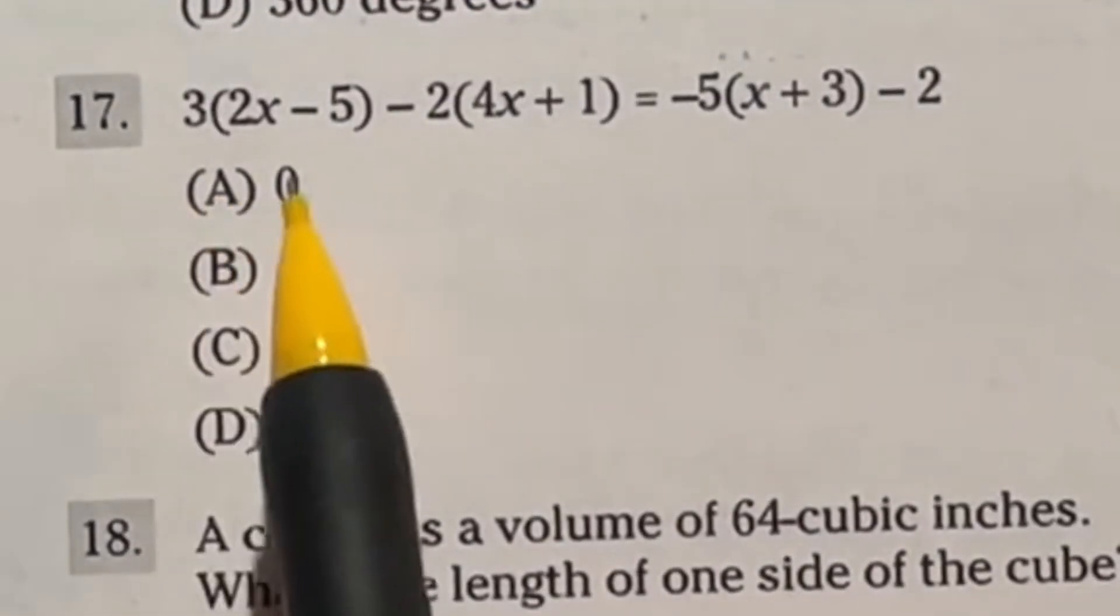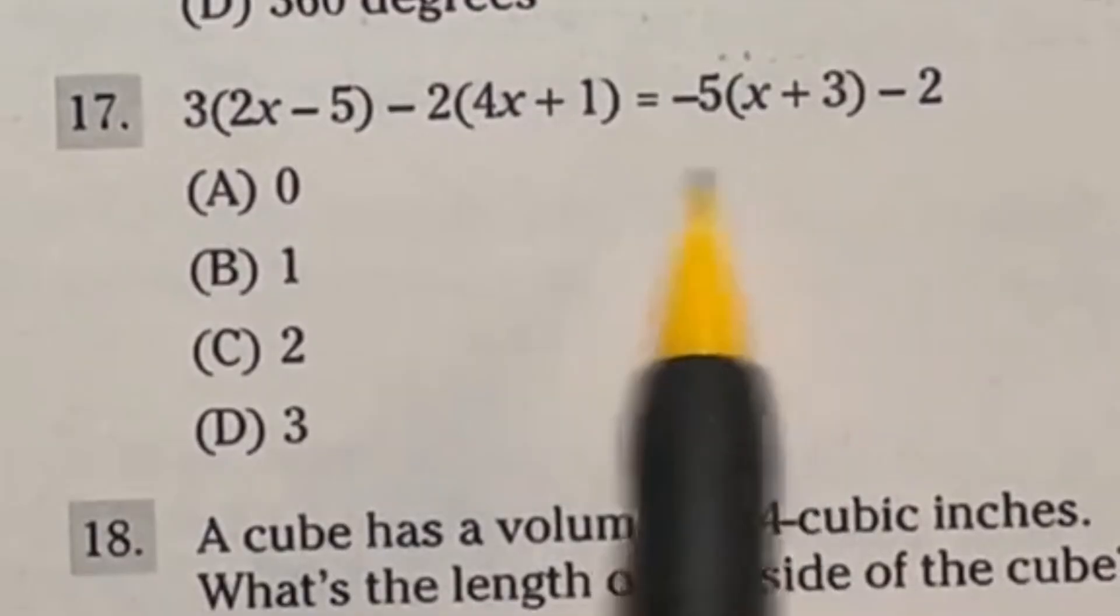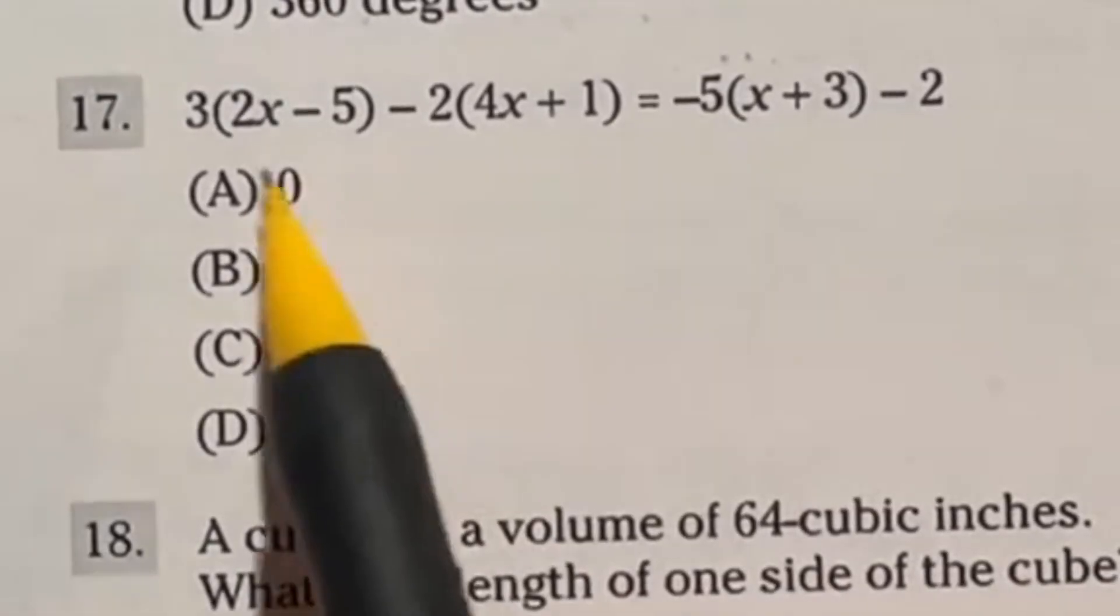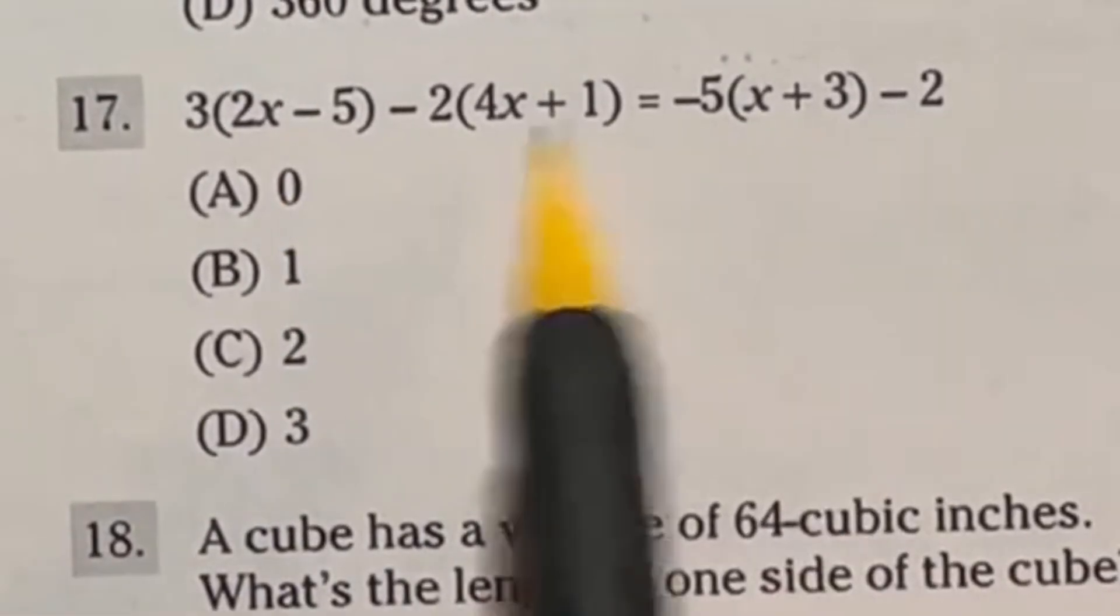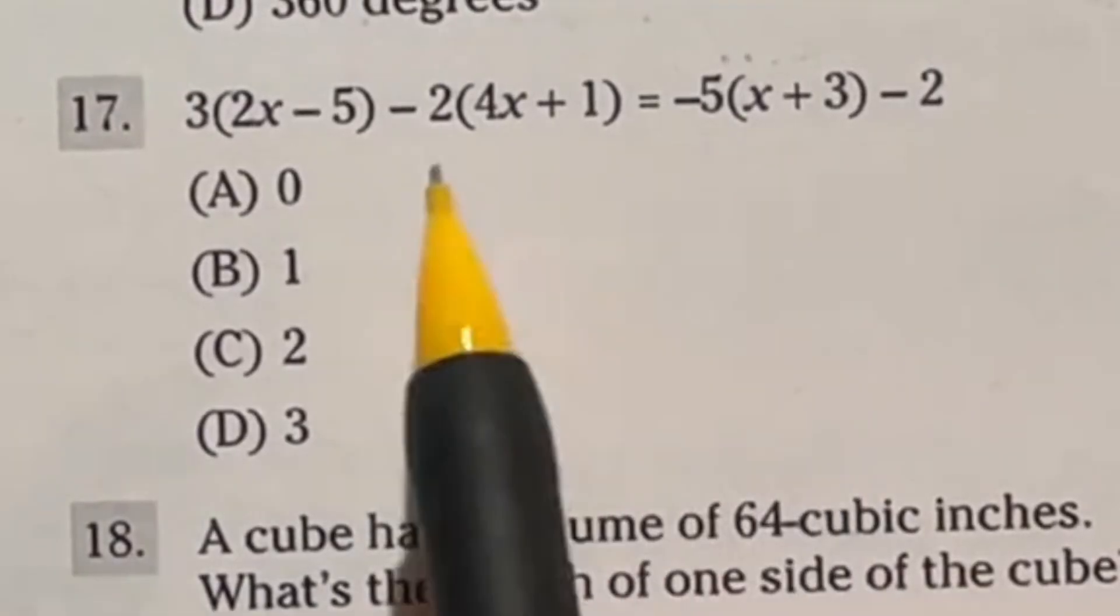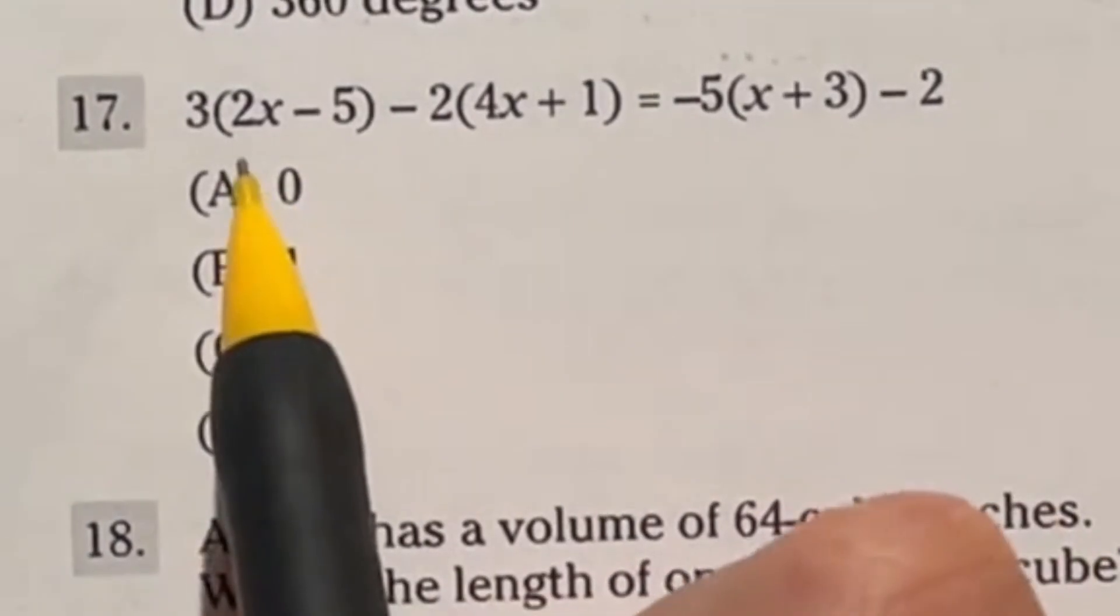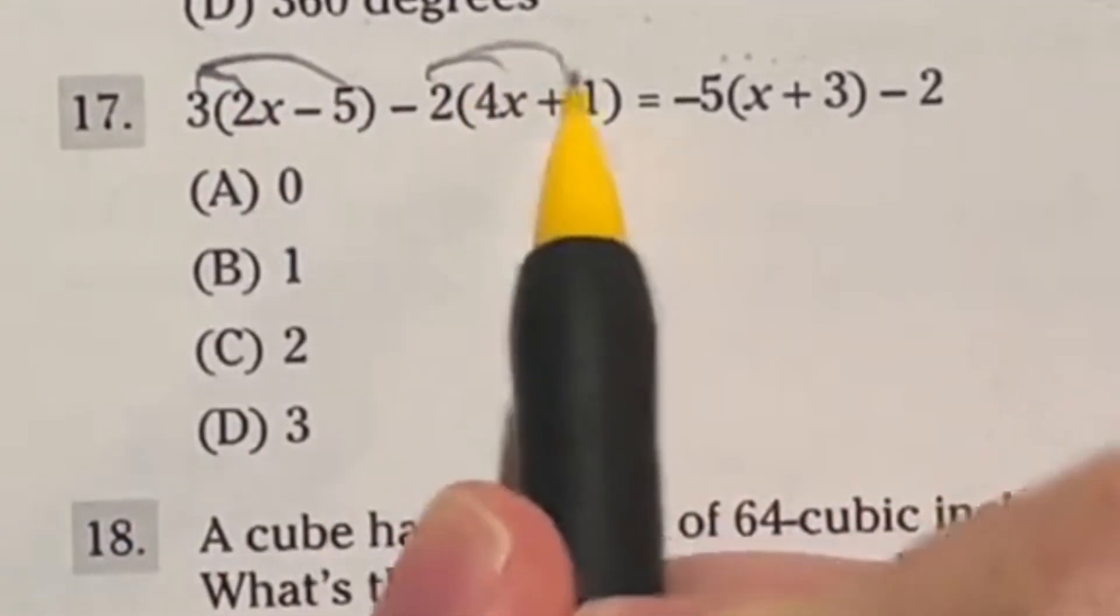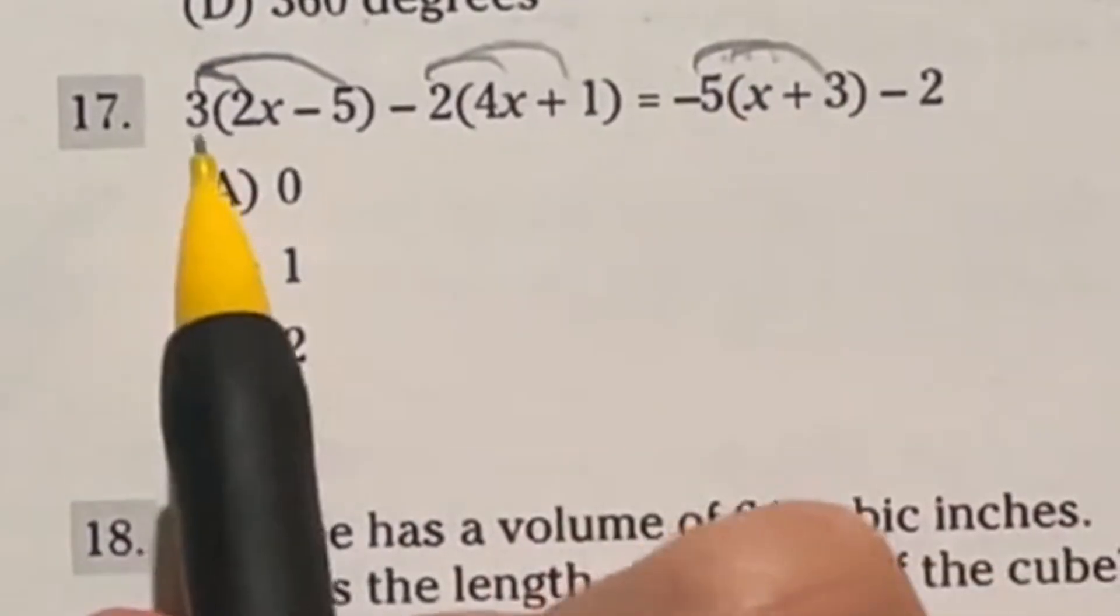We're going to take a look at number 17 today. This is an algebra question. Obviously, a lot of things here. Two ways you could do it. You could either start plugging in answers and see which one actually makes it equal, or you can go ahead and try to solve this baby out. Let's go ahead and go with the latter of the two. Let's start by distributing all these things.